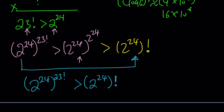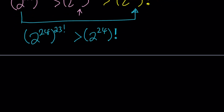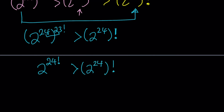And these two multiply together to form 24 factorial. Putting the pieces together and backing up from what we had, this inequality holds. Therefore, our winner is 2 to the power 24 factorial — that is, 2 raised to the power (24 factorial). We got a winner!